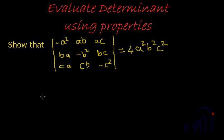Hello, welcome back to our series on determinants. In this video, we shall solve a problem where we use properties of determinant to show that the given determinant is equal to 4a square, b square and c square.